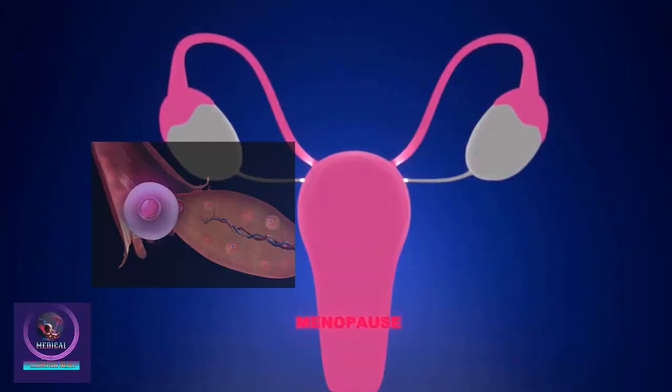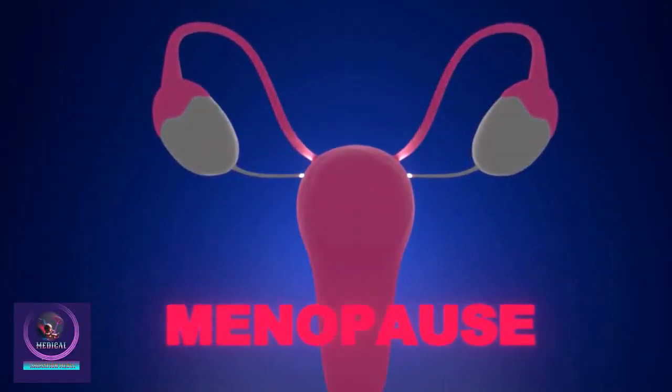When a woman goes through menopause or the change of life, her ovaries stop producing eggs and make less hormones.